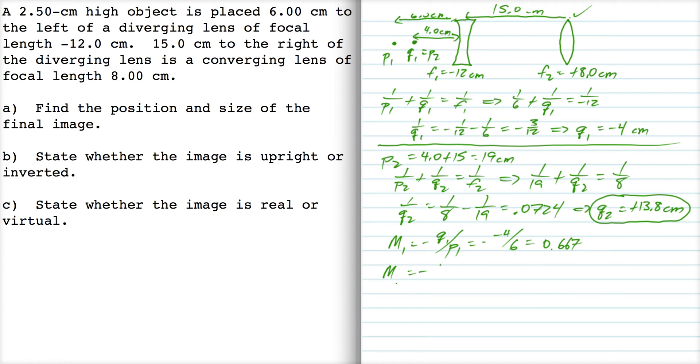Magnification for lens 2 is minus Q2 over P2. So that's minus 13.8 over 19. So that's minus 0.727. So the total magnification is the product of these two, which is minus 0.485.